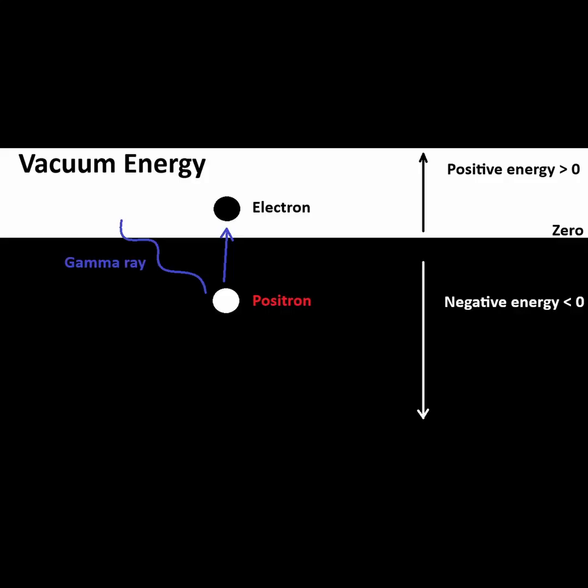How would an electron, for example, be removed from the vacuum? This requires energy. A high energy photon, like a gamma ray, can be used to knock out an electron, turning it into a conventional positive energy electron particle. Additionally, this would leave a hole in the negative vacuum energy — an absence of negative charge — which would manifest as a positively charged positive energy particle, the positron. Conversely, if the electron and positron recombine, the hole is filled and the high energy photon energy is released again.